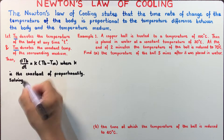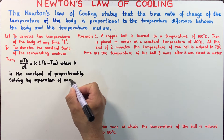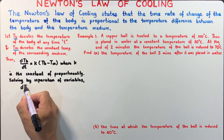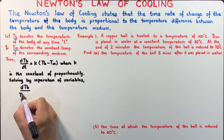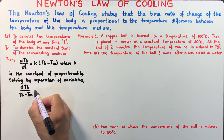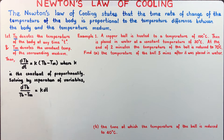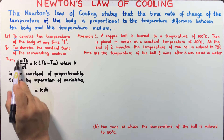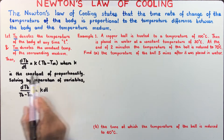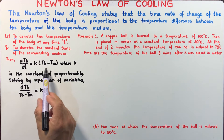Solving this by separation of variables, we have the differential of T over T sub B minus T sub M, which is equal to K DT. Here, all the big T's represent temperature and the small t represents time. We isolate all temperature representations on the left and all non-temperature representations on the right, by multiplying both sides by DT and dividing both sides by T sub B minus T sub M.